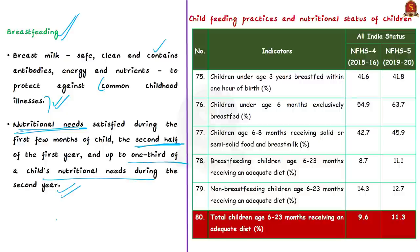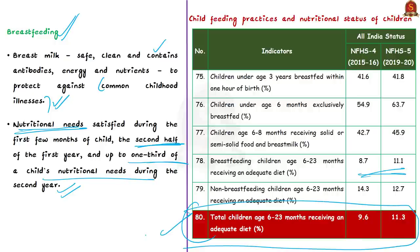According to the survey, early initiation of breastfeeding is static — there is no improvement compared to the last survey period. This means there is a hindrance in providing nutrients to children in the first few months of life. The indicator of total children aged 6 to 23 months receiving an adequate diet shows only 11.3%, up marginally from 9.6% in 2015-16. This shows only 11.3% of children in this age group actually receive an adequate diet.